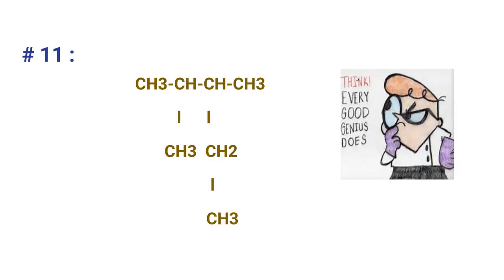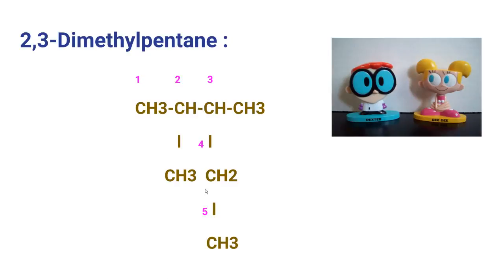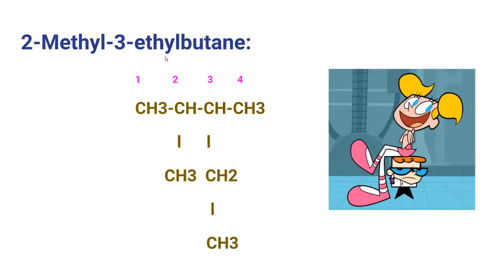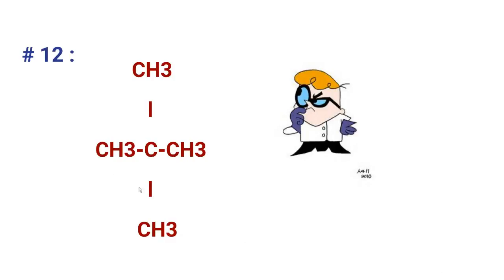Here is the eleventh compound. Think hard. One might say the name is 2-methyl-3-ethylbutane, but that is incorrect, because the longest continuous chain consists of five carbons — this is the hidden longest continuous chain. A methyl group is on the second carbon and a methyl group is on the third carbon, so the correct name is 2,3-dimethylpentane. You must be very careful while choosing the longest continuous chain.